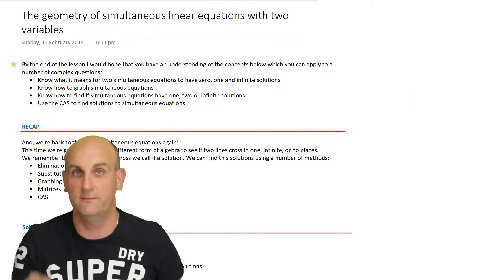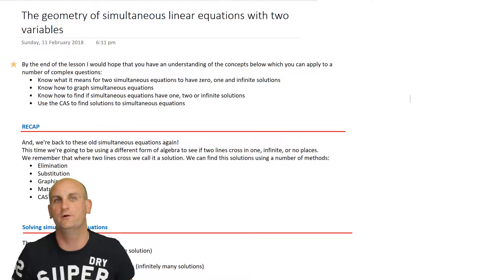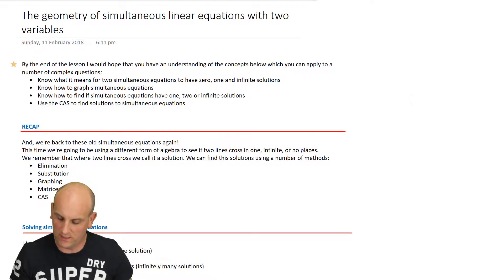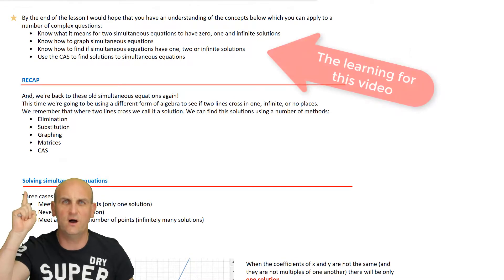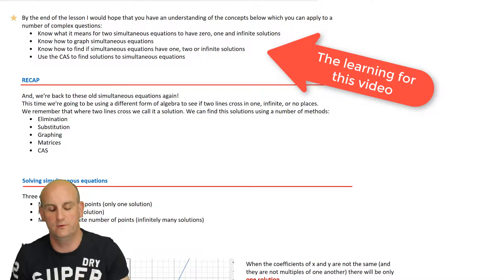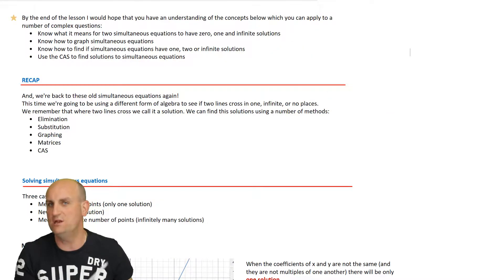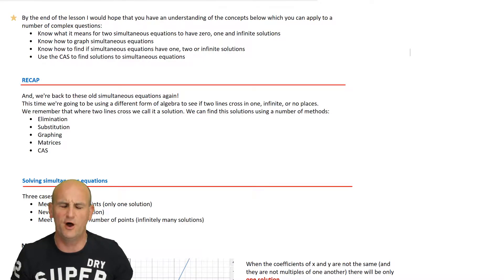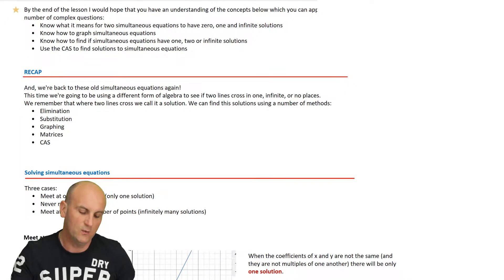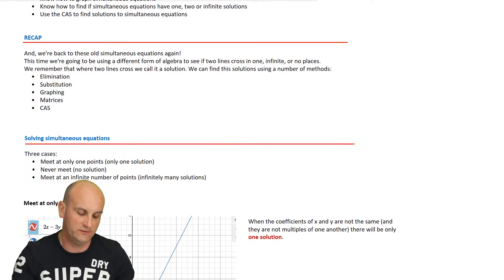This is a continuation of a lesson from the Methods 3 and 4 course here in Australia. Don't worry if you're not doing Methods 3 and 4, or if you're not even in Australia. Maths is a universal language and simultaneous equations, linear equations, variables — all that type of stuff is standard. The learning objective is to know what it means for two simultaneous equations to have zero, one, and infinite solutions, how to graph them, find solutions, and how to use the CAS.